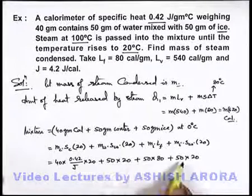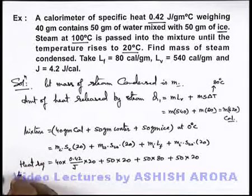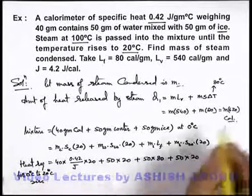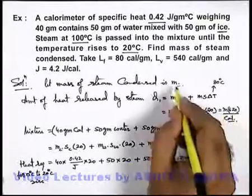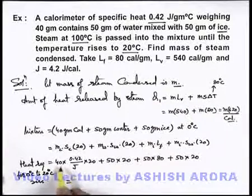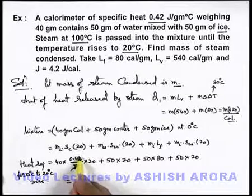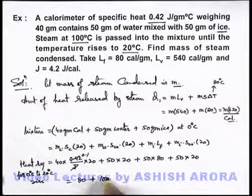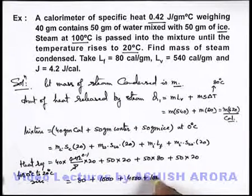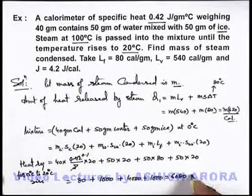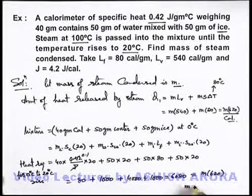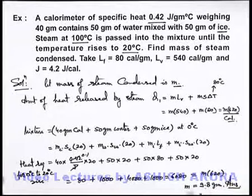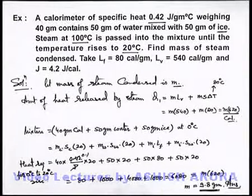This is the total amount of heat required for the zero to 20 degree centigrade rise in temperature. The total heat available is m multiplied by 620, where m is the mass of steam condensed. Calculating: 40 times 0.42 divided by J — J and 0.42 cancel — giving 0.1, so that term is 0.1 times 40 times 20 equals 80, plus 1000, plus 4000, totaling 6080 calories. So 6080 equals m times 620, giving m equals 6080 divided by 620, which is 9.8 grams. This is the mass of steam condensed.